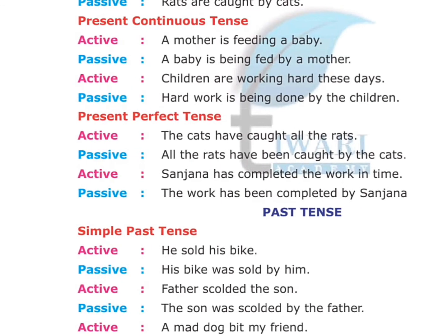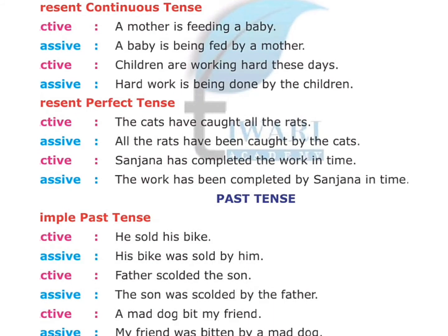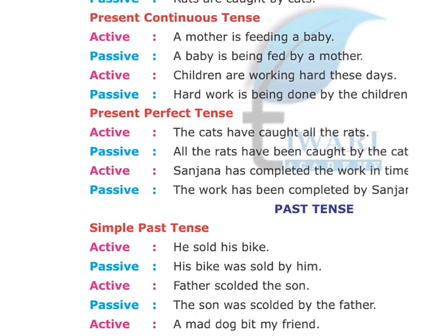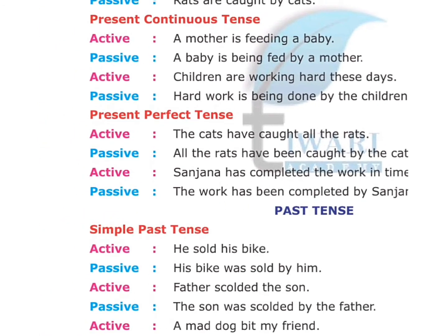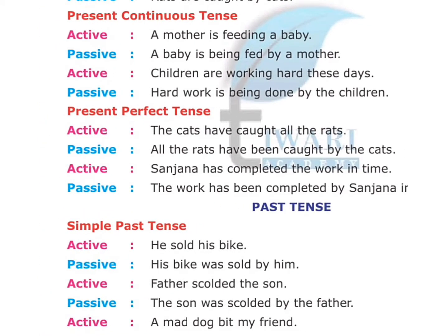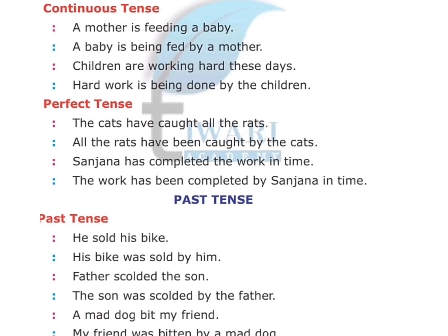Present perfect tense. Active: 'The cats have caught all the rats.' Passive: 'All the rats have been caught by the cats.' In present perfect tense, we use have/has been followed by the verb in third form. For example: Active: 'Sanjana has completed the work in time.' Passive: 'The work has been completed by Sanjana in time.'